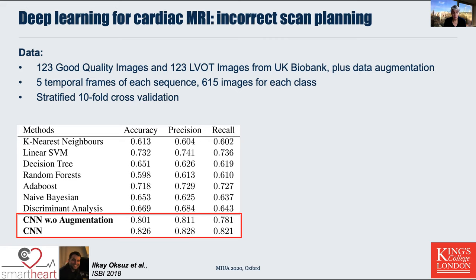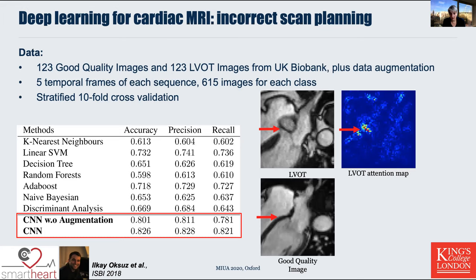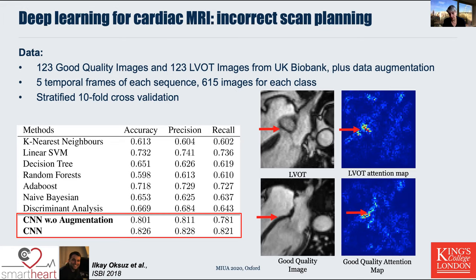We were also interested to see what the network actually learns. This is a zoom-in region where the LVOT is present in the four-chamber view, and this is a good quality image. If we look at the attention map of the network, we see that the focus for the LVOT image — the poor quality image — is directly at the position where the LVOT is present, whereas in the good quality attention map it's at the separation of the heart chambers. That gave us reassurance that the network is focusing on the right areas when training.